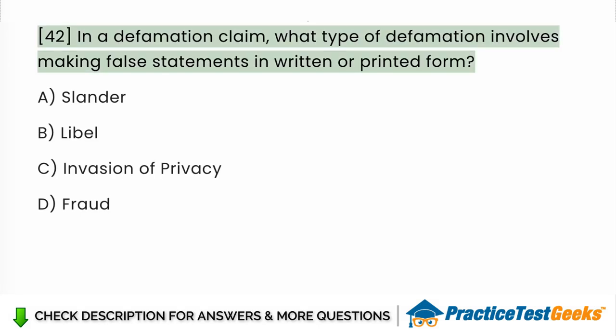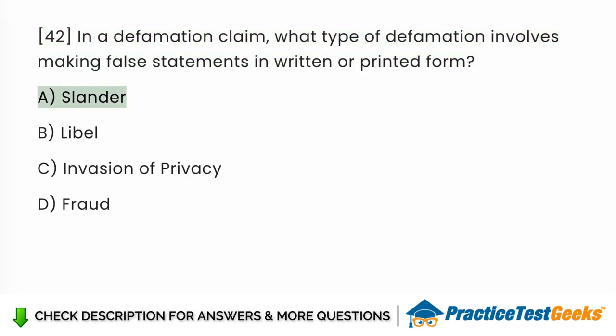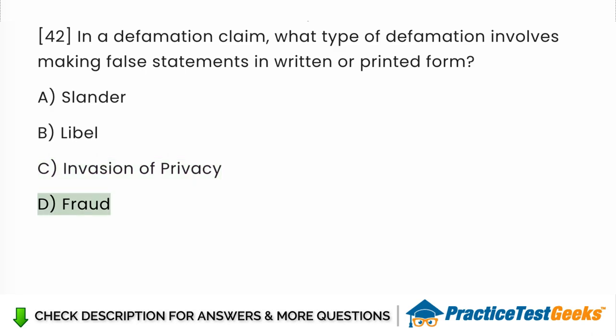In a defamation claim, what type of defamation involves making false statements in written or printed form? a. Slander. b. Libel. c. Invasion of Privacy. d. Fraud.